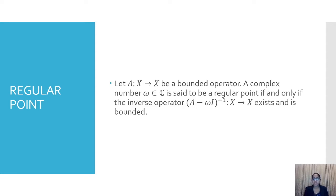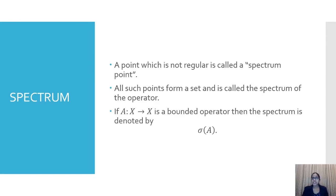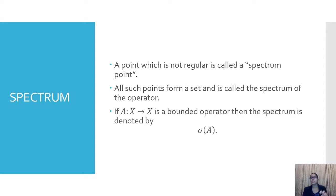Next we shall discuss what is spectrum. Before understanding spectrum, we need to know what is meant by a spectrum point. A point which is not regular is called a spectrum point. In this chapter, all scalars belong to C — we are exclusively concentrating on complex numbers only. So any complex number which is not a regular point of a bounded operator is said to be a spectrum point.